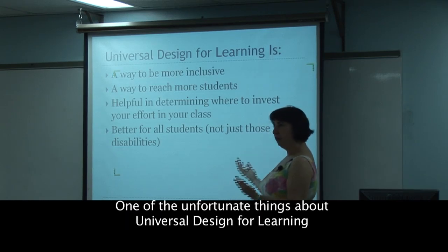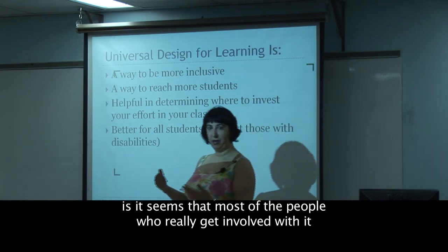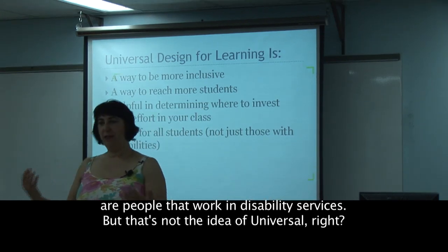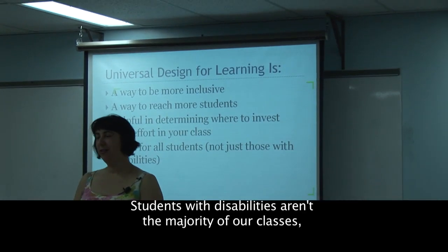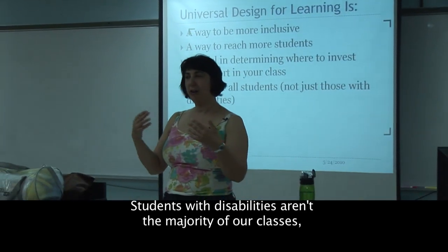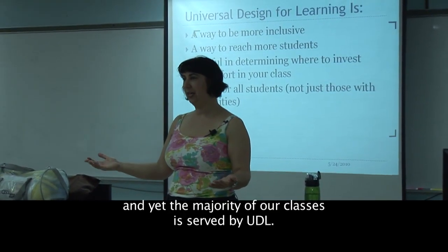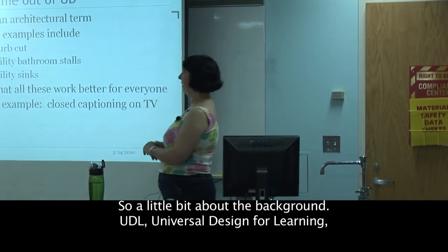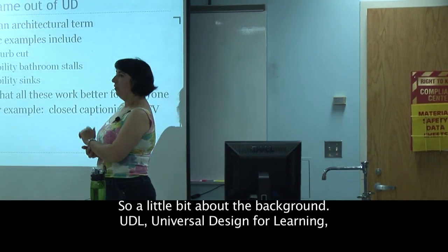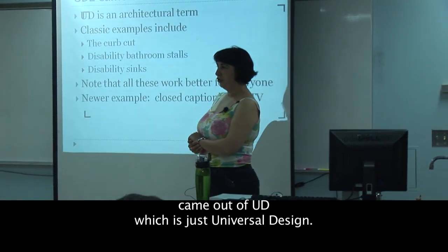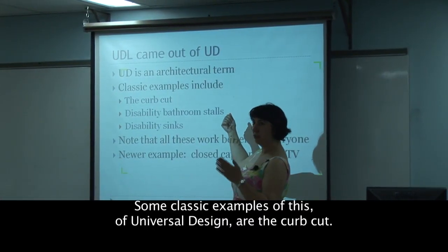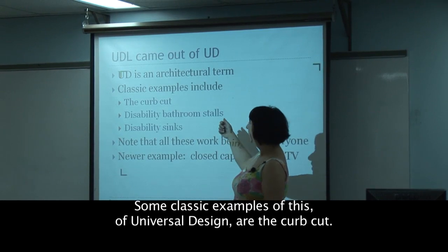One unfortunate thing about Universal Design for Learning is that the only people who really get involved with it are people who work in disability services. But that's not the idea of 'Universal.' UDL came out of Universal Design — UD. Some classic examples of Universal Design, not for learning, include the curb cut: when you get to the corner, the curb is cut down so you can roll a wheelchair or walker right into the street.